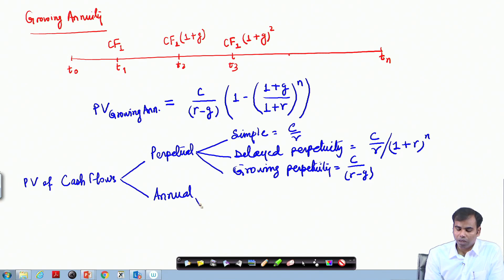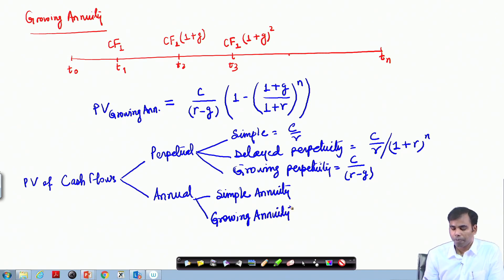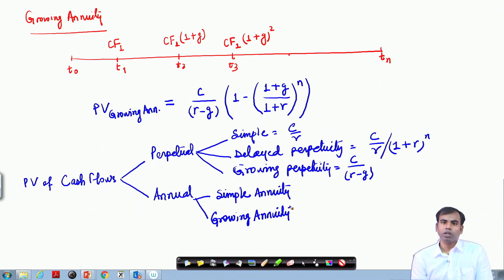For annuity cash flows, we discussed simple annuity and growing annuity. Delayed annuity follows the same logic — you just delay it for a certain number of years. These two formulas have been discussed in this session.